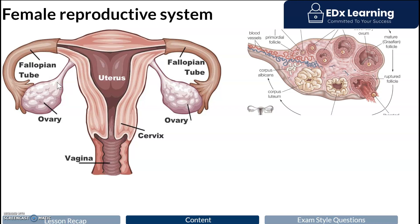A woman actually contains the maximum amount of ova when she's in gestation — in the womb. As she goes throughout life she's exposed to radiation and mutation, which results in the degeneration of egg cells. This is why at approximately age 40, women often have dysfunctional ova to the point that there's a high risk of genetic diseases in offspring, including conditions such as Down syndrome.